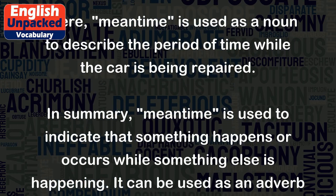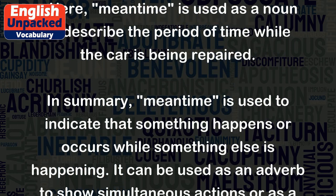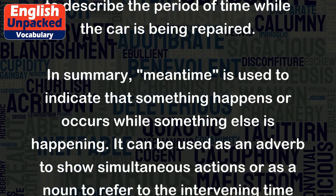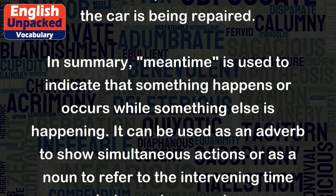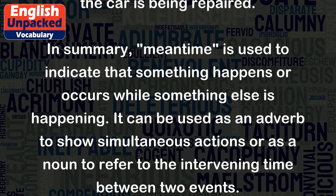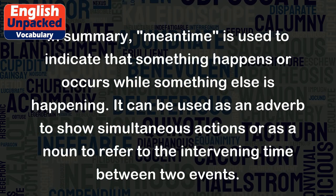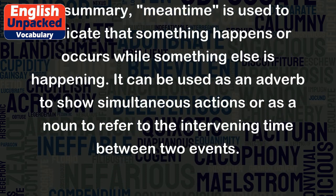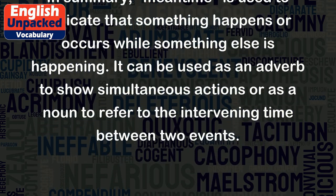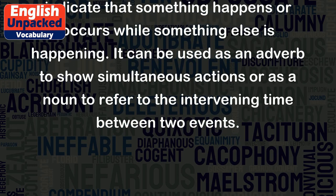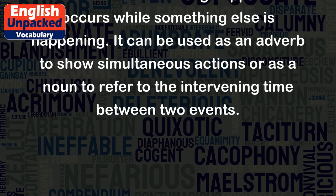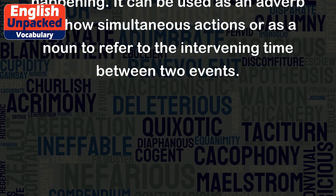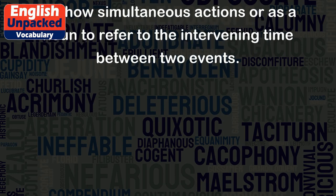In summary, 'meantime' is used to indicate that something happens or occurs while something else is happening. It can be used as an adverb to show simultaneous actions or as a noun to refer to the intervening time between two events.